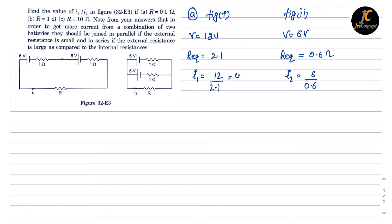i1 works out to 40 by 7 and i2 becomes 10. The ratio i1 by i2 is therefore 40 by 7 upon 10, which equals approximately 0.57. This is the solution for part a.